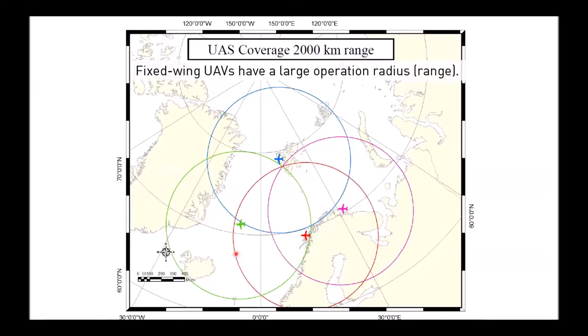But why would anybody actually want to use them? The reason is that fixed-wing drones can have a really large range. It's not uncommon even for smaller ones to fly for several hours and cover literally hundreds of kilometers. Some, with a combustion engine and a wingspan of about two meters, are claimed to have a range of 2000 kilometers — meaning you could fly such a drone from the Norwegian mainland all the way up to Svalbard.